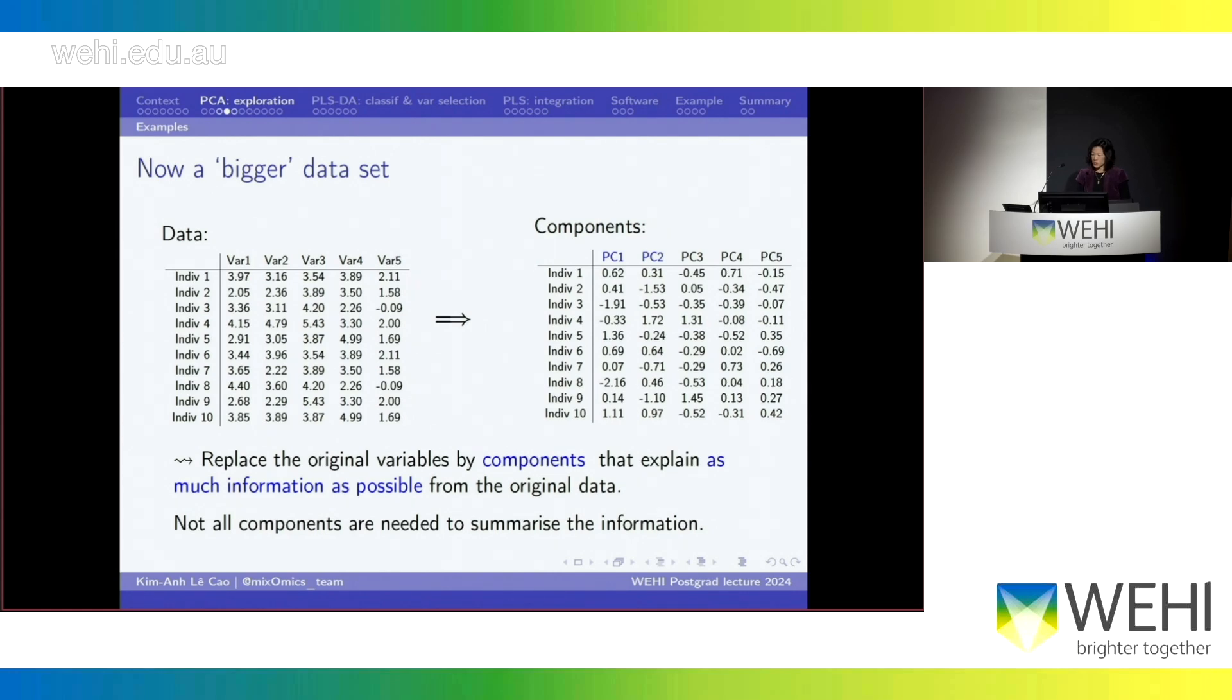And those principal components are designed to explain as much information as possible. Because we're interested in dimension reduction, meaning that we don't want five variables, that's way too many, we want maybe one or two variables. And so we may only consider, for example, the first two components, and say that's it, that's enough. It will explain as much information as I'm happy with from this data set, and therefore have reduced the dimension of my data from five to two.